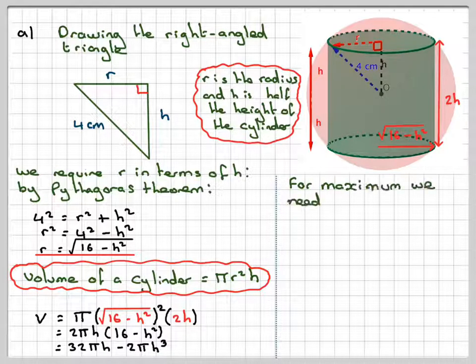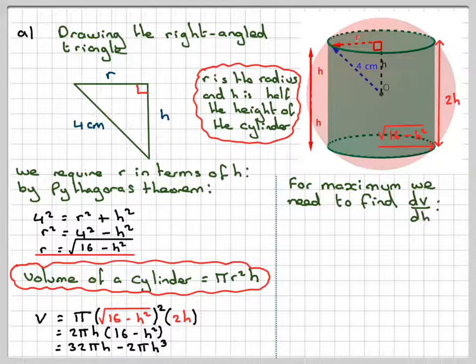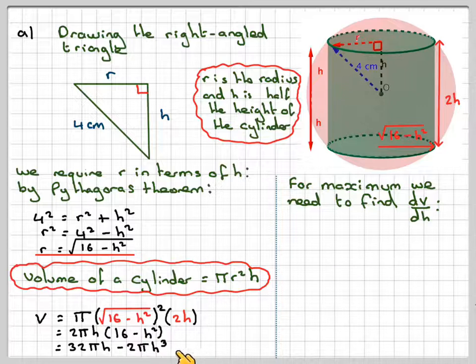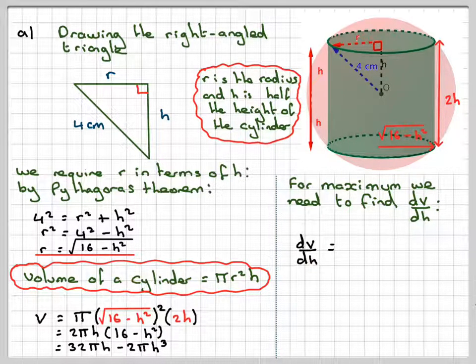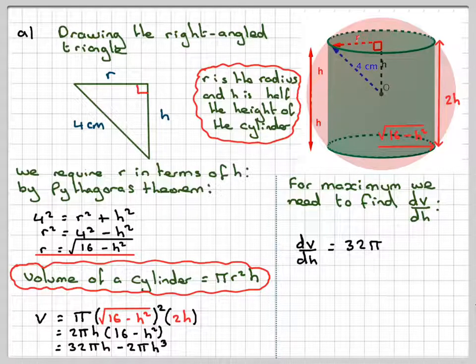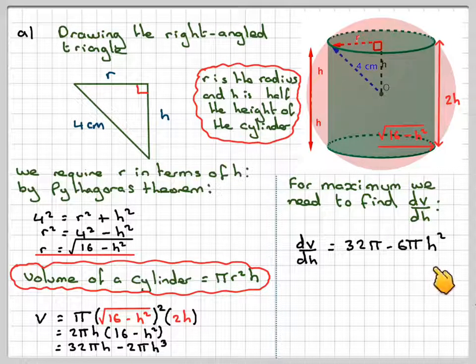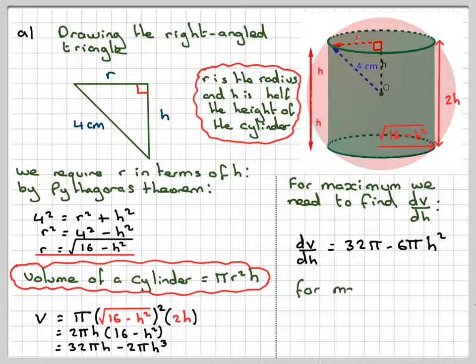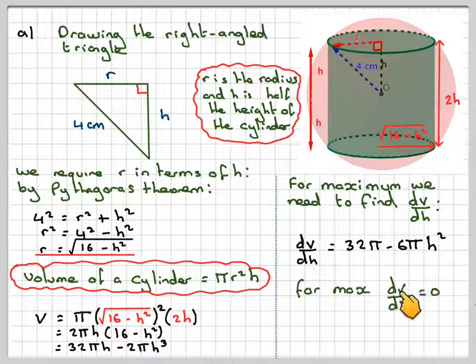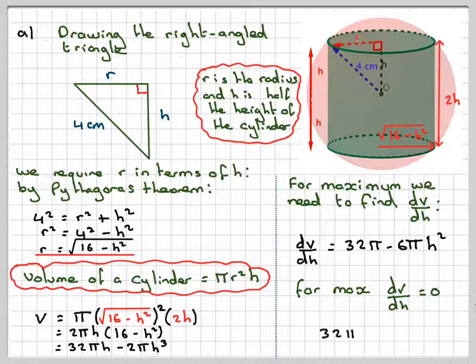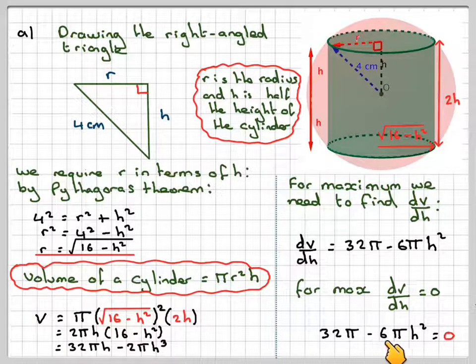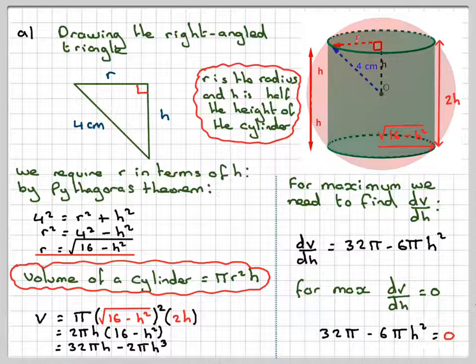Right, so for a maximum, we need to differentiate the volume now with respect to h. So we're going to have dv/dh is going to be equal to 32π minus 6π h squared. For a maximum, the derivative dv/dh will have to be equal to 0. So we'll put 32π minus 6π h squared equal to 0.